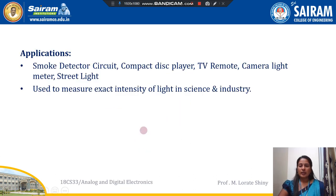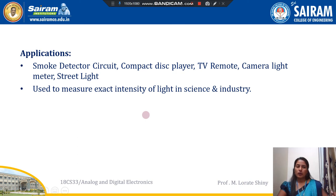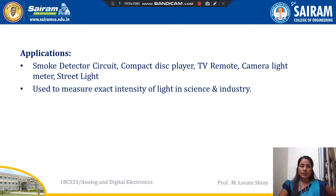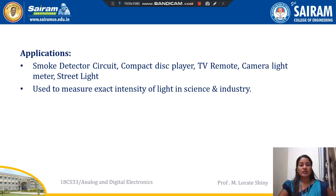Applications: photodiodes are used as small detector circuits. They are used in compact disc players, TV remotes, camera light meters, street lights, and also to measure the exact intensity of light in science and industry. That's all. Thank you.